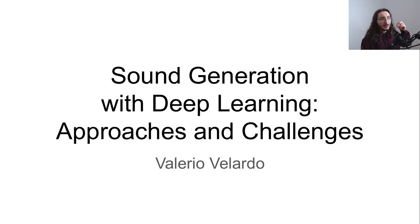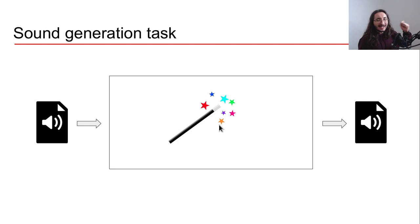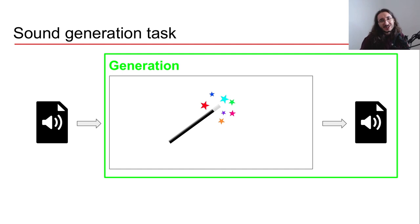So what's the sound generation task? In a nutshell, we take a bunch of audio files, fit them to a network, and generate other sound. This task has two clearly separate steps: first is training, where we feed a bunch of sounds into a black box deep learning model; and second is the generation part, where we generate new sound.